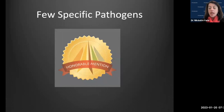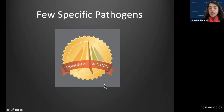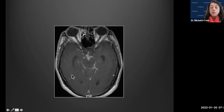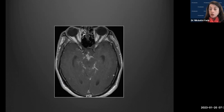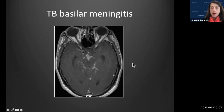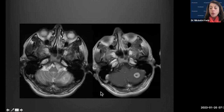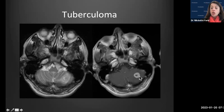That completes the anatomically-bound infection component. Now moving to specific pathogens: case three showed an axial T1 post-contrast image with thick enhancing process involving the basal cisterns — TB basilar meningitis. Another TB presentation is a tuberculoma: a rim-enhancing lesion in the left cerebellum with a very thick wall. The central aspect is T2 iso-intense rather than bright, reflecting a granulomatous rather than frank purulent process.